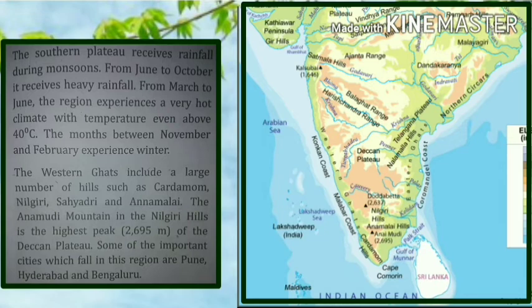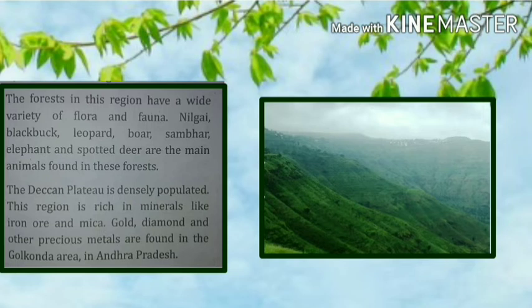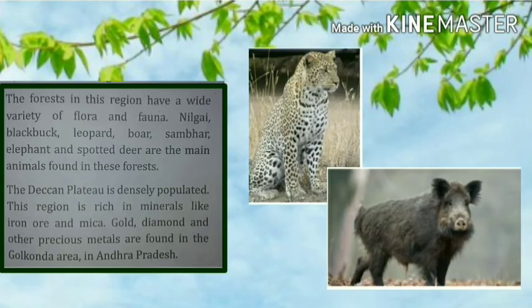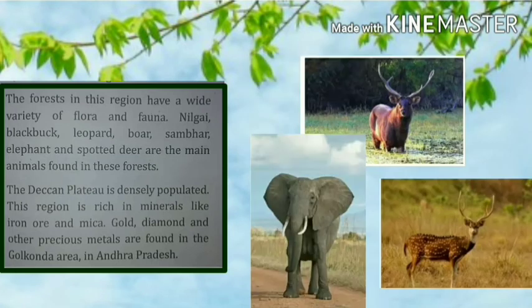Some of the important cities which fall in this region are Pune, Hyderabad, and Bangalore. The forests in this region have a wide variety of flora and fauna. Some examples of animals found here include the Nilgiri black bug, leopard, boar, elephants, spotted deer, and various bird species.